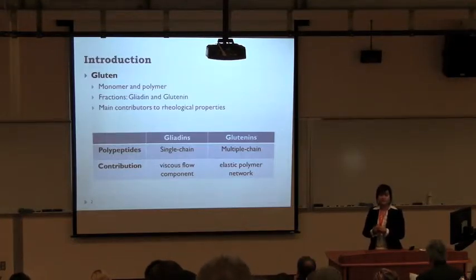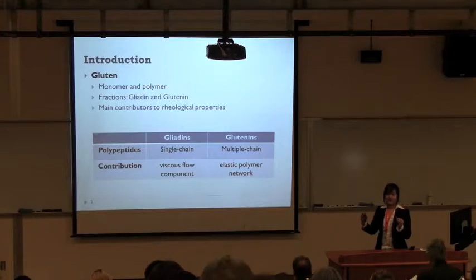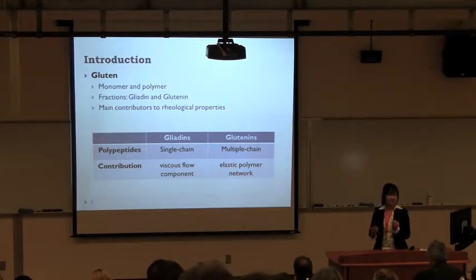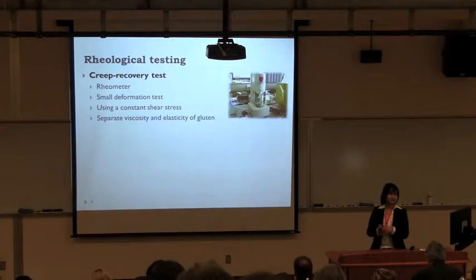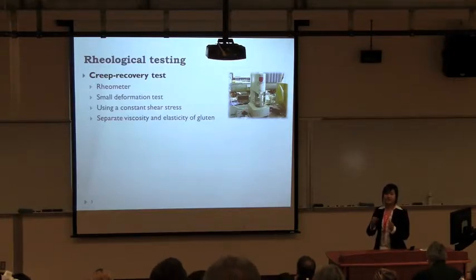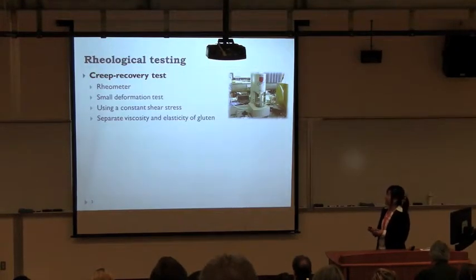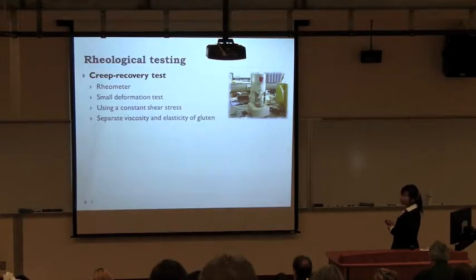The elastic polymer network can be explained by when we stretch the dough and release the force, it will snap back to its original shape. The rheological or physical testing is the study of the flow or deformation of the material, such as the creep-recovery test, which can be performed by using the rheometer.